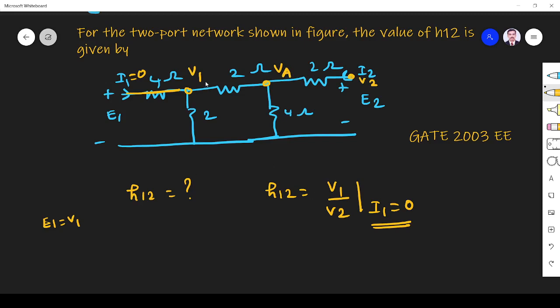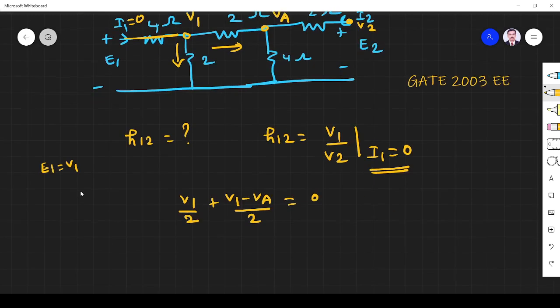Now I apply nodal analysis at this node. At node v1, what is the nodal equation? For this branch it is v1 by 2, for this branch v1 minus va by 2, that is equal to 0.